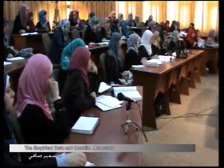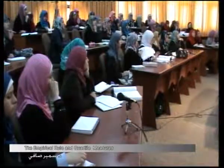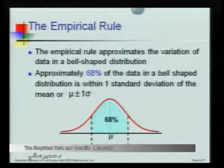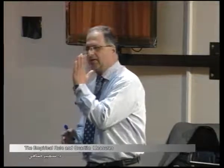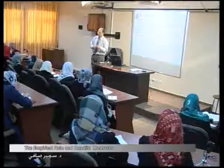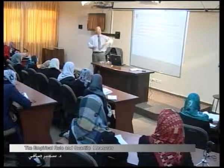The next topic is the empirical rule, which is used to approximate the variation of data. Suppose the data is bell-shaped, meaning symmetric around the mean — the mean is the vertical line that splits the data into two equal halves, with 50% to the right and 50% to the left. The empirical rule applies when the data is bell-shaped, normal, or symmetric — not skewed either to the right or to the left.